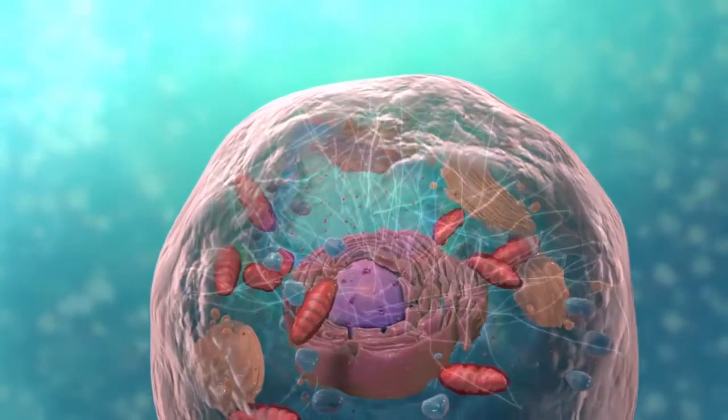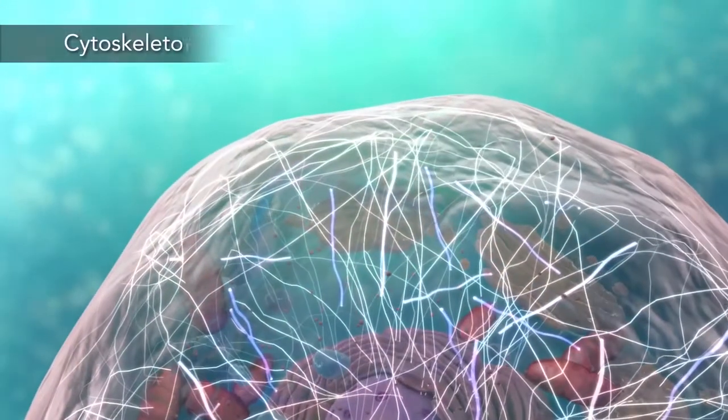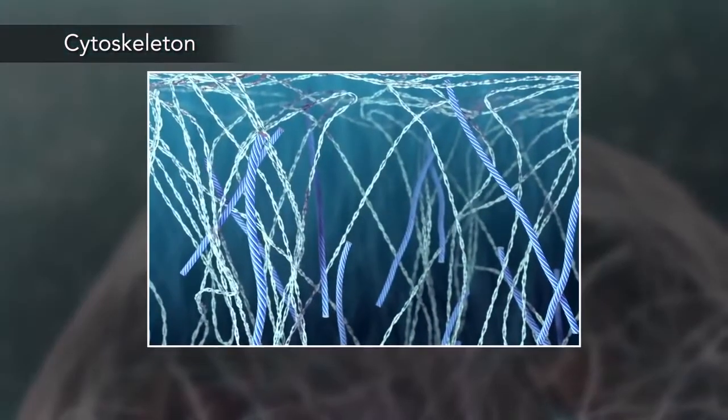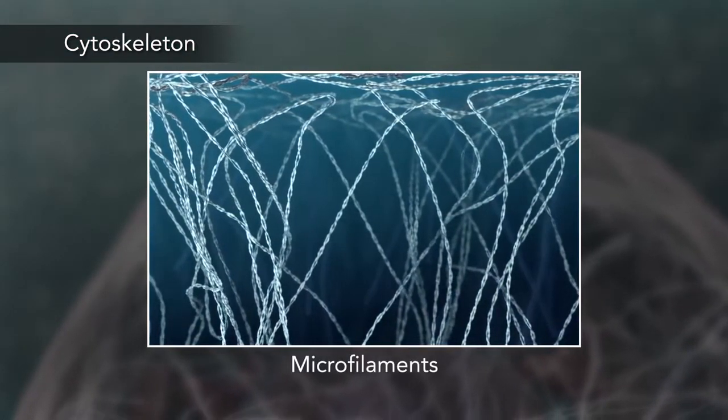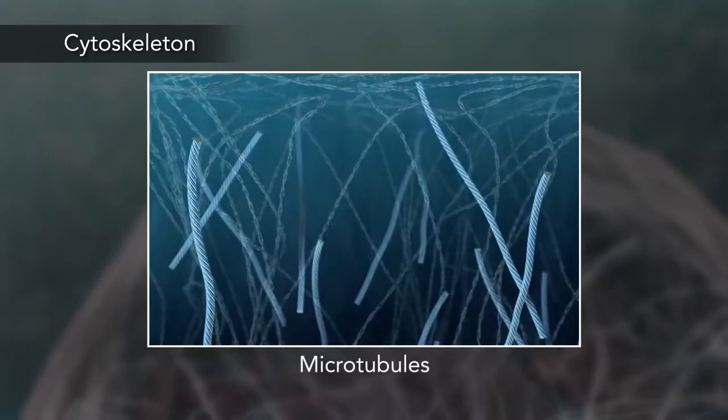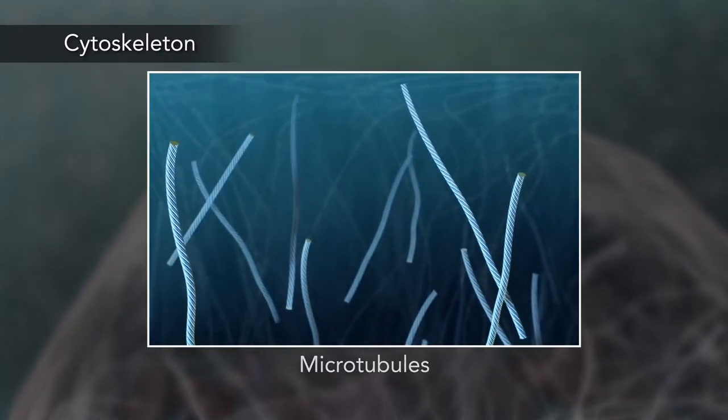Meanwhile, the cell maintains its shape through a cytoskeleton. The cytoskeleton includes the thread-like microfilaments, which are made of protein, and microtubules, which are thin, hollow tubes.